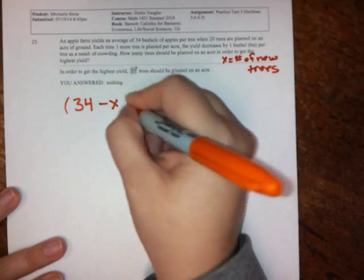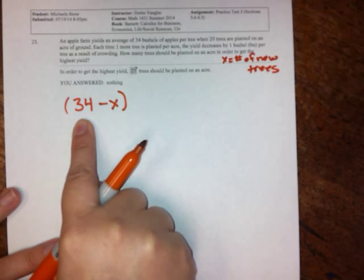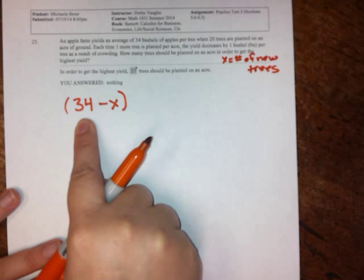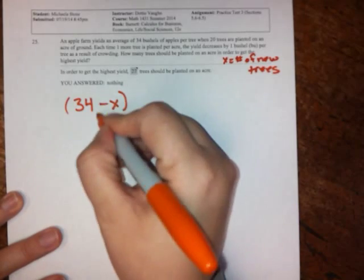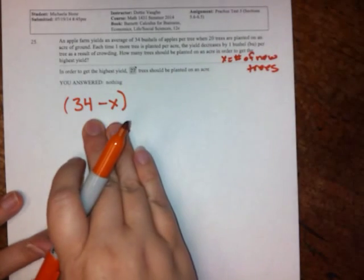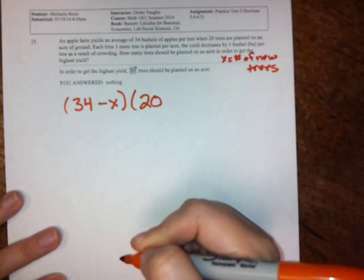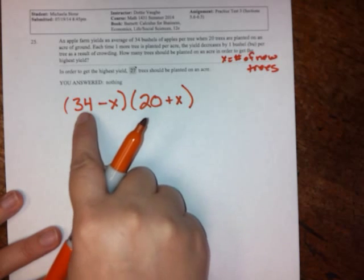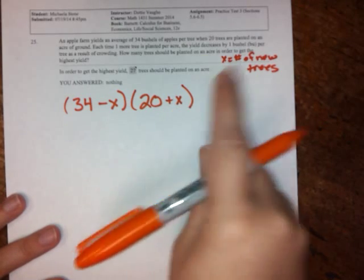Okay, so if I do 34 minus x here, that tells me that I start out with 34 bushels per tree. But every time I add a new tree, I lose a bushel. So if I plant one tree, if x equals one, I'm only going to get 33 bushels per tree. If I get five, I'm only going to get 29 bushels per tree. So this is the first part of your function. And then in order to figure out what our actual yield is, this is how many average bushels per tree, but we need to know how many trees we have. Well, we're starting with 20 and then basically adding one at a time. We're adding a certain number of trees. So we get 34 bushels minus the number of new trees times 20 plus the number of new trees.